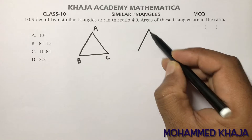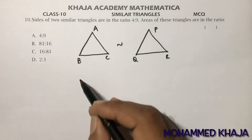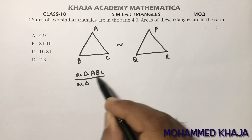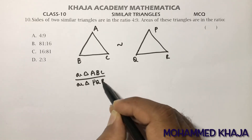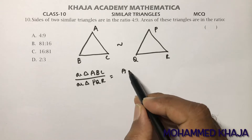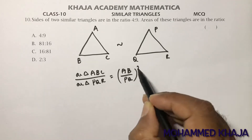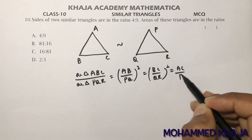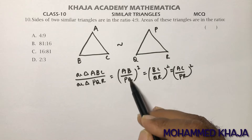Take two triangles ABC and PQR. If the triangles are similar, then the area theorem states: the ratio of the areas of two similar triangles is equal to the ratio of the squares of their corresponding sides — AB/PQ whole square, or BC/QR, or AC/PR.